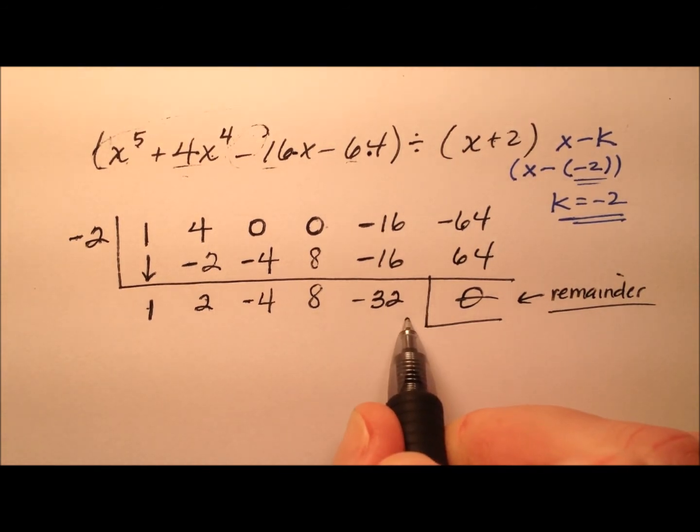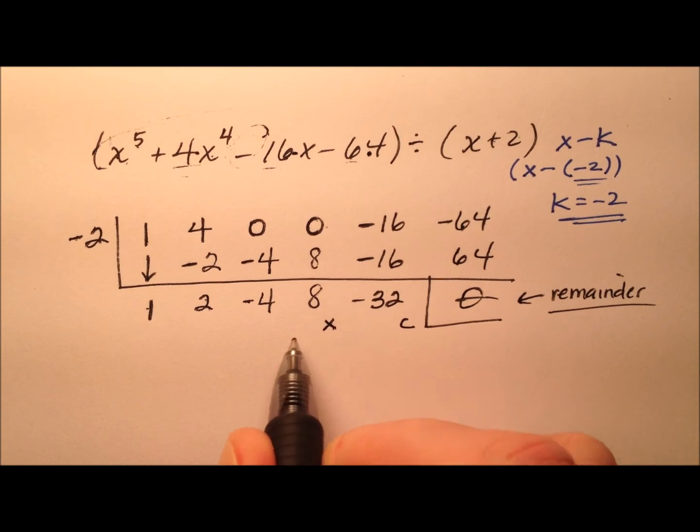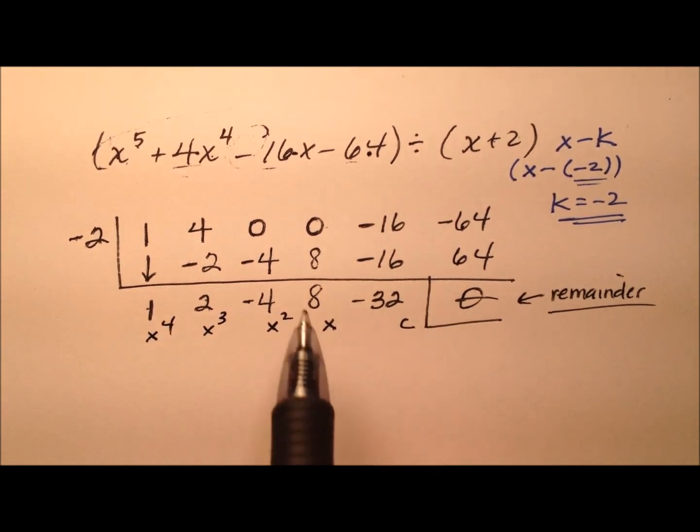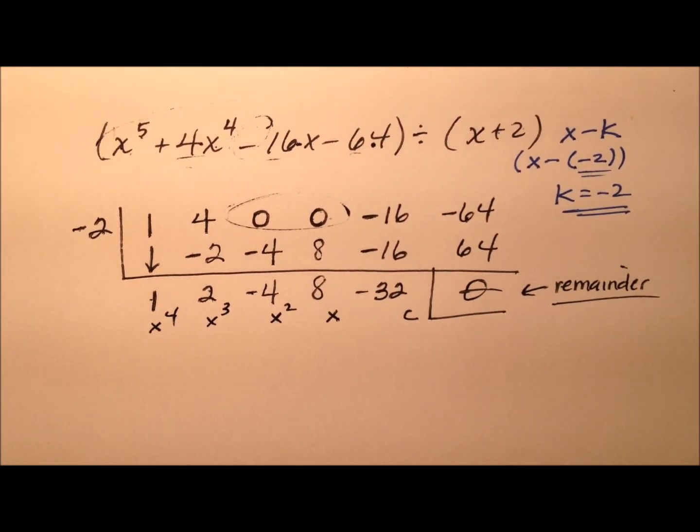So building this back up, we have our constant, our linear, our quadratic, cubic, and quartic terms. And even though we had some zeros in the midst here, everything took care of itself.